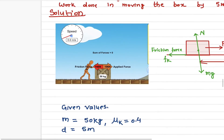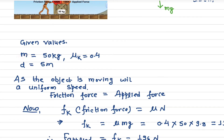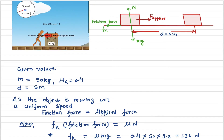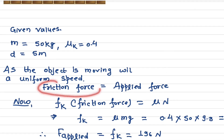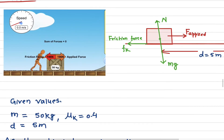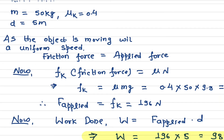Now let's calculate the amount of work done. The mass is 50 kilograms and the coefficient of kinetic friction is 0.4, between the block and the ground. The friction force equals the applied force, so let's calculate the friction force. To calculate the friction force you need to know the normal force.